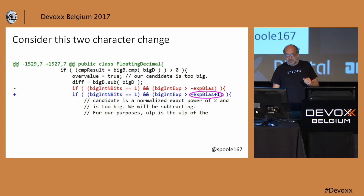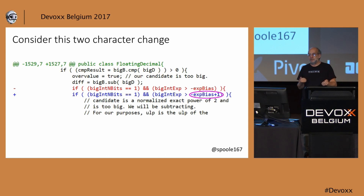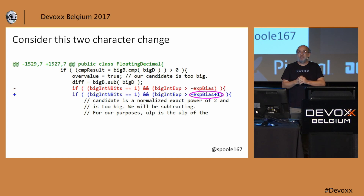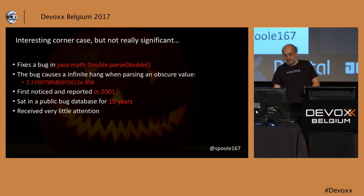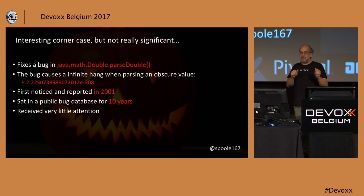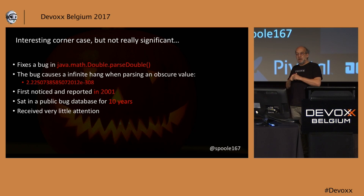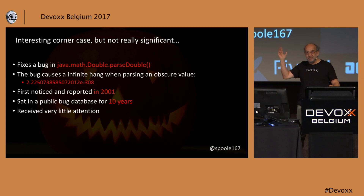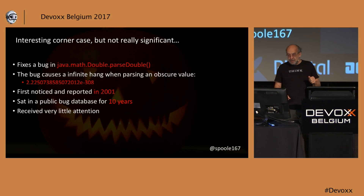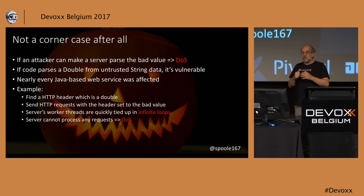So let's start with a really simple bit of code. This is a diff — a two-character change, not very much. You wouldn't notice it. It's a corner case: there's a bug in parseDouble where if you pass in a particular number — 2.2-something — the code parsing it will loop forever. It was found and reported in 2001, and it just sat around for 10 years.